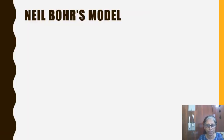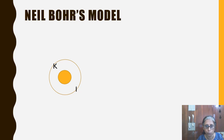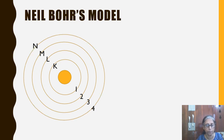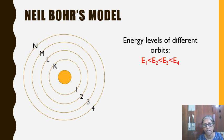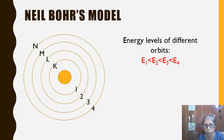Now we'll see how it is explained in Neil Bohr's model. Here you find the first picture with nucleus and around that you have the orbit K, given the number 1, and then L with 2, M with 3, and N with 4. You know that electrons go around the nucleus along these orbits, and each orbit has some fixed energy associated with it. The first shell, K shell, has the lowest energy level, and when you go to the next shell L the energy level is higher, and so on to M and N.